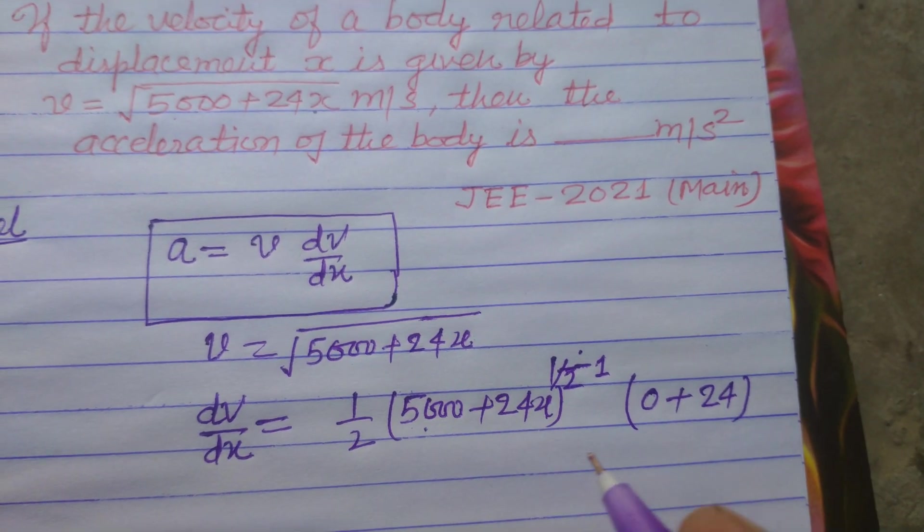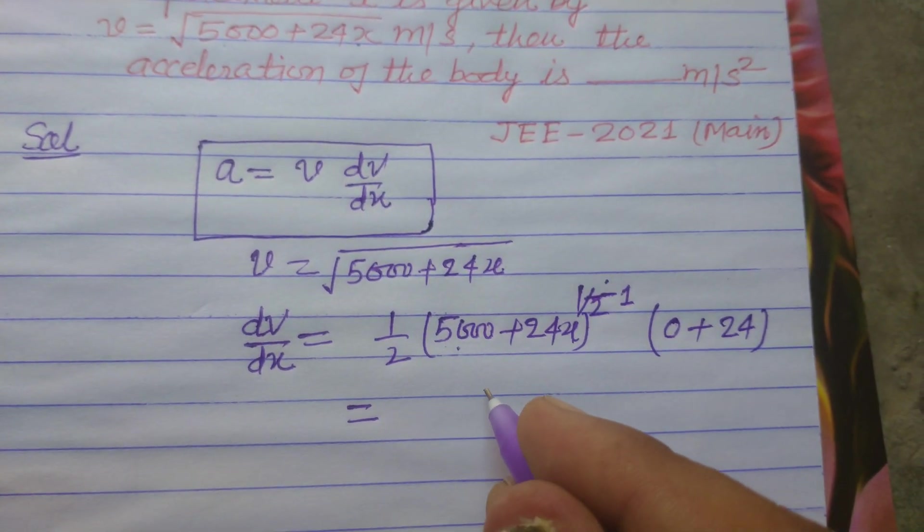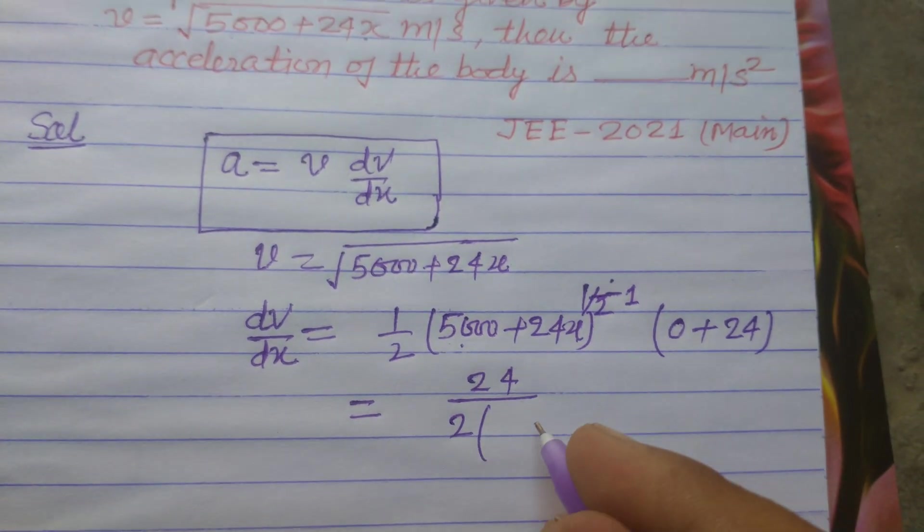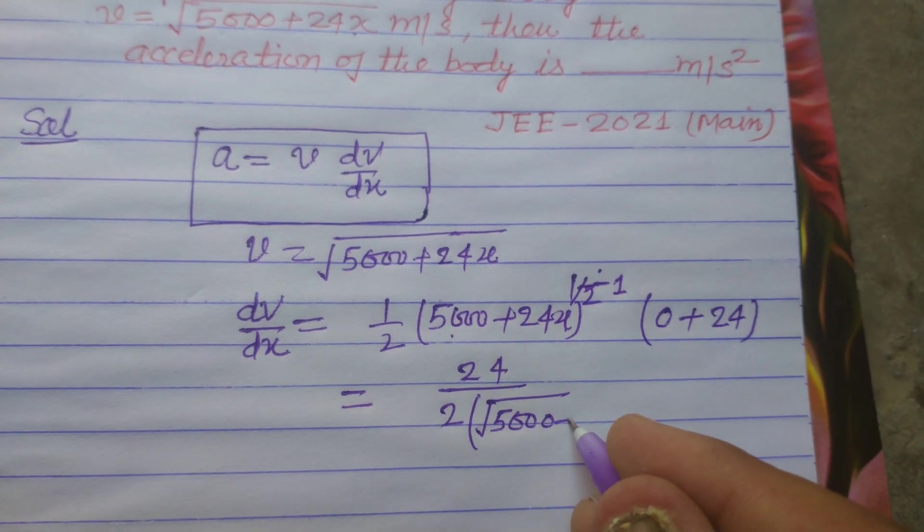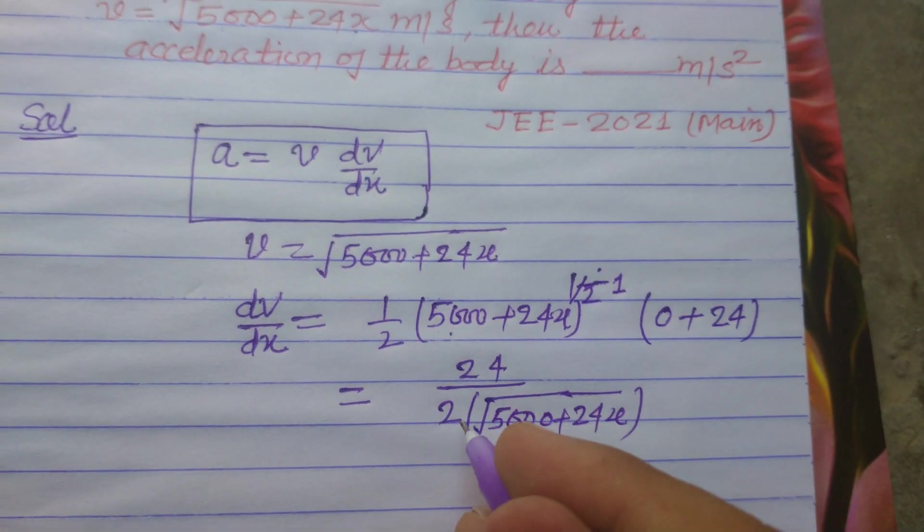The differentiation of x is 1. So we can write this as 24/(2√(5000 + 24x)).